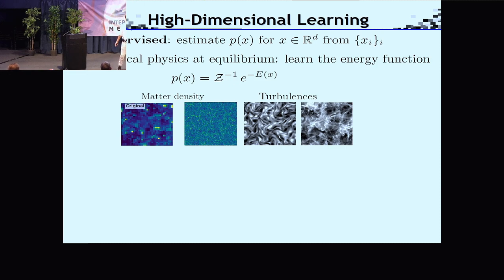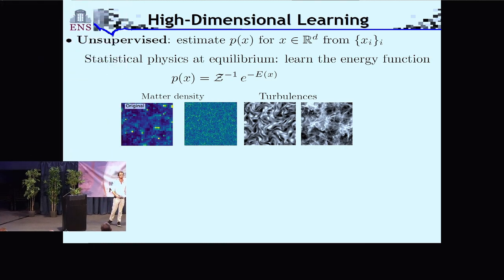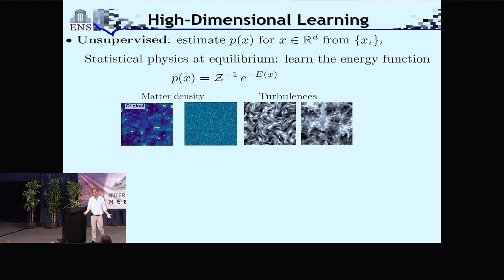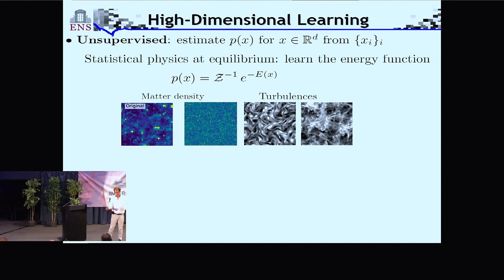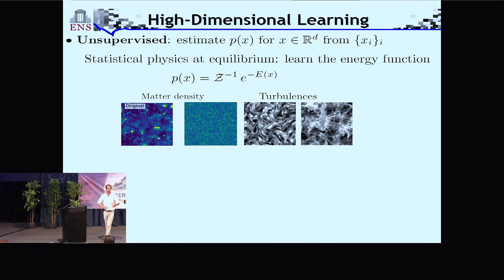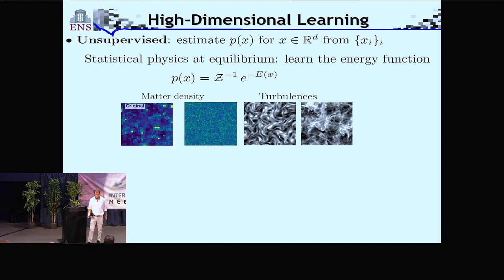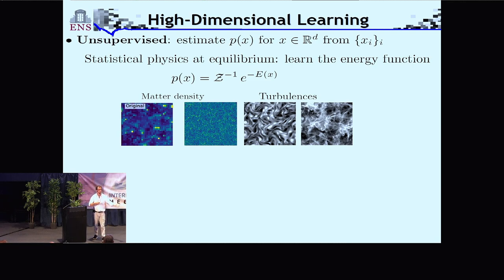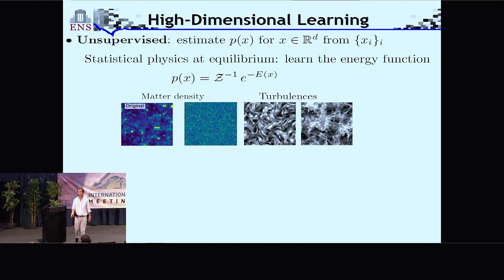The topic in general is high-dimensional learning. You have basically two types of problems. On one hand, unsupervised learning, where you are given data — images, sounds, or fields coming from physics. What you want to understand is the underlying probability distribution of this data. In the framework of statistical physics, it will be about estimating the Gibbs energy E(x) of an n-body interacting system.